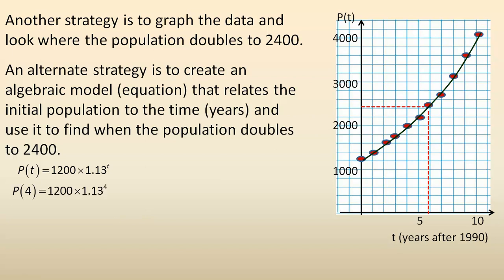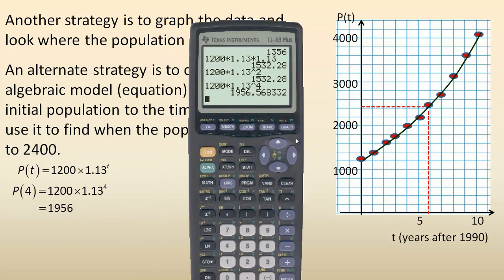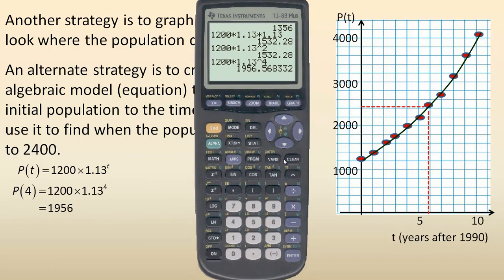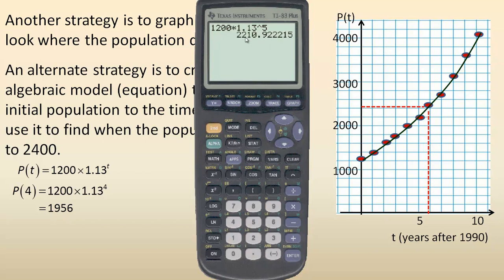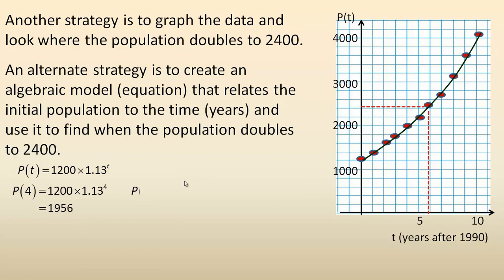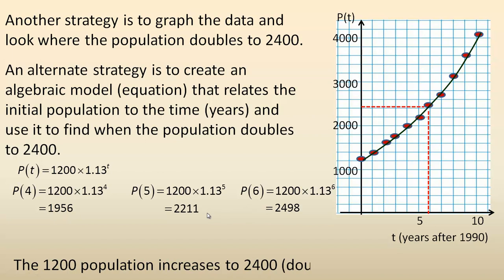So if I wanted to, I could plug a number like 4 in. That's 1956, not high enough to reach 2400. We could try another one, maybe 5 years: 1200 times 1.13 to the power of 5. Not quite at 2400 yet. Let's try 6 years. That's 2498, again differing by one from the table because of rounding. So it takes about 6 years. The population after 5 years was about 2211, after 6 years it was 2498. So it's taking about 6 years to double to 2400, just through trial and error.